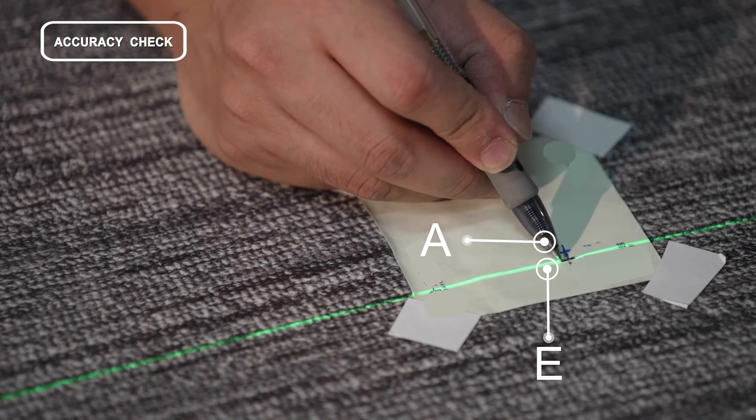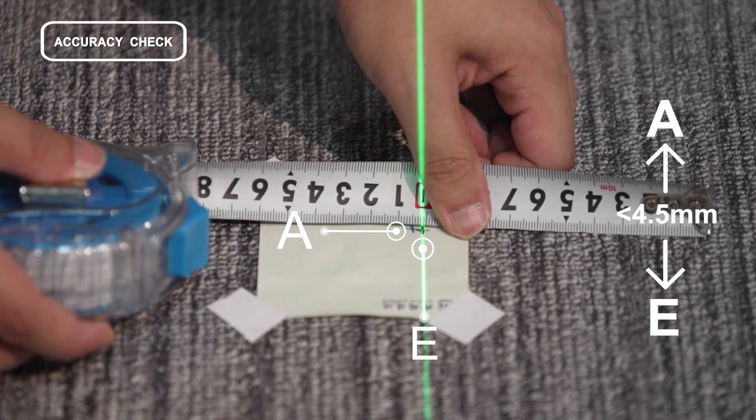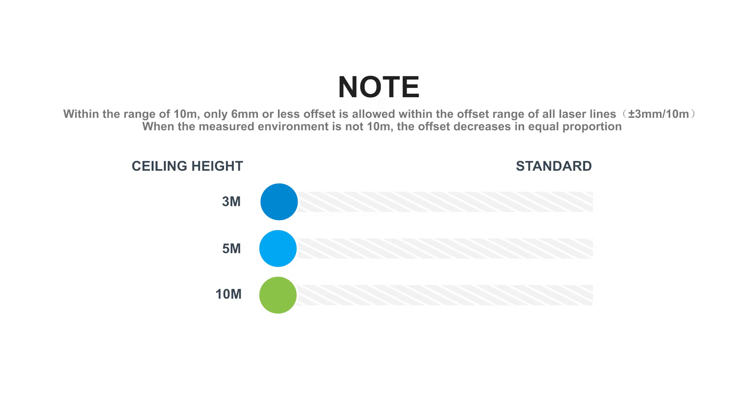At the position of mark E, measure the offset of mark E and mark E. The offset value should be less than 4.5 millimeters. If the offset value is more than 4.5 millimeters, the laser tool should be returned to the service center for repair.